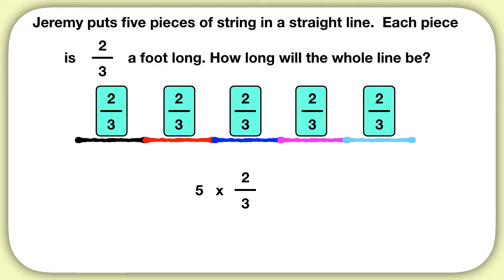Now to figure out what this equals, we could just repeatedly add 2 thirds. 2 thirds plus 2 thirds is 4 thirds, plus another 2 thirds is 6 thirds, plus another 2 thirds is 8 thirds, plus another 2 thirds is 10 thirds.